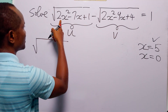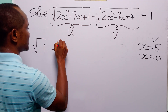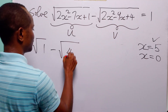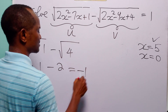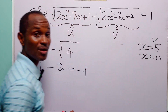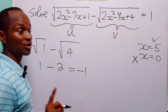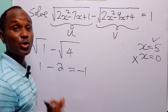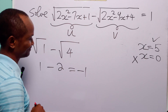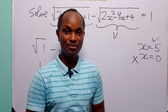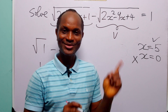Now when we substitute x equal to 0 into the original equation, we have the square root of 1 minus the square root of 4. The square root of 1 is 1 and the square root of 4 is 2, and 1 minus 2 is minus 1. But what we have on the right-hand side is 1, so this second value of x is an extraneous solution — it doesn't satisfy the original equation. So the only value of x that satisfies this original radical equation is x equal to 5. Thanks for watching.